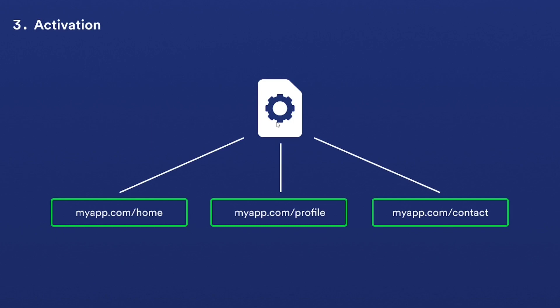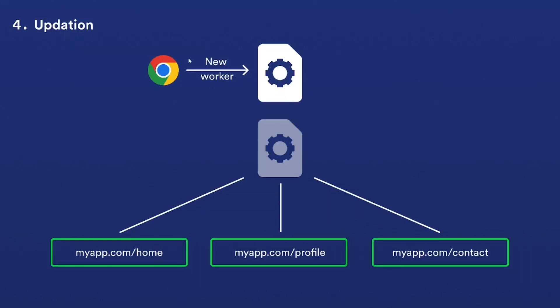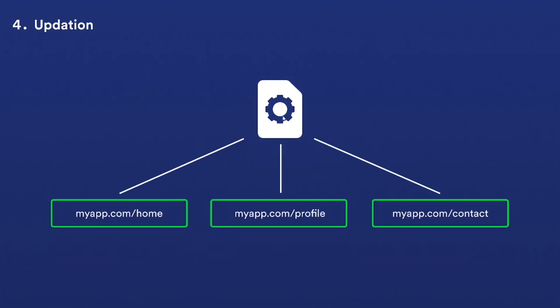Once activated, the service worker is ready to handle events and network requests. It intercepts requests made by clients and can either respond directly from its cache or forward the request to the network. If there is a new version of the service worker available, the browser checks for updates in the background. When an update is detected, the new service worker is downloaded and goes through the same installation and activation phases again. If the service worker is not actively handling any events for a certain period, it may be terminated by the browser to conserve resources, but remains dormant until the next event triggers its execution.